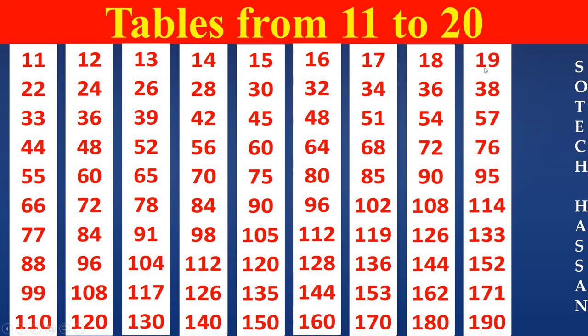19th table. 19 ones are 19. 19 twos are 38. 19 threes are 57. 19 fours are 76.